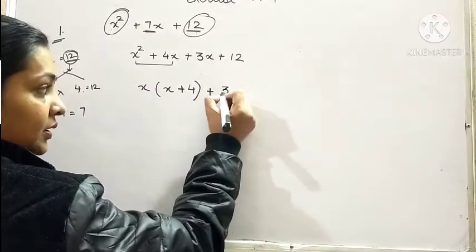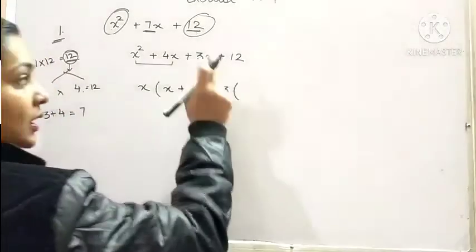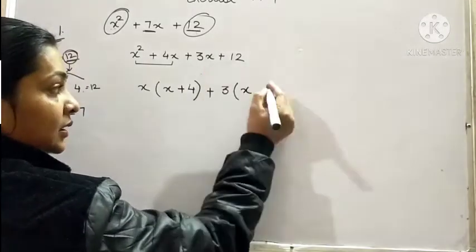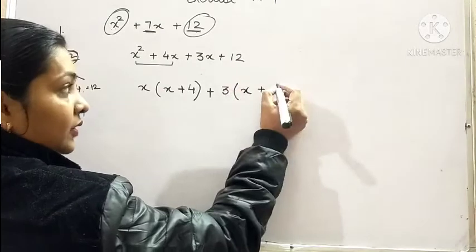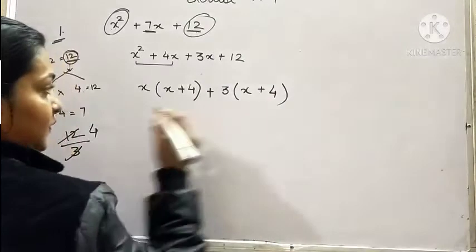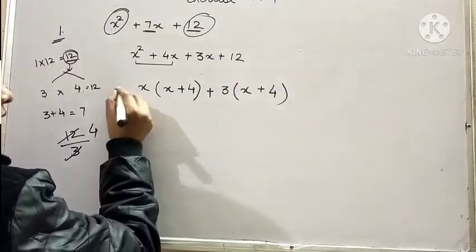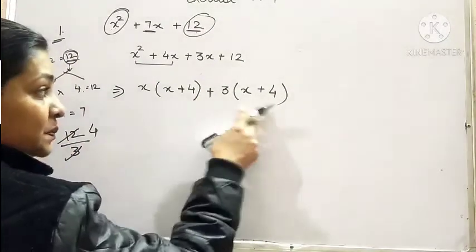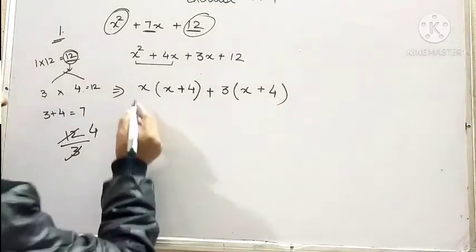Plus, out of these two terms, what is common? 3. Take out 3 common. What will be left? x plus, when you divide 12 by 3, you get 4. Now you can see in this expression, x plus 4 is common in both the terms.